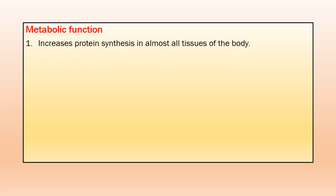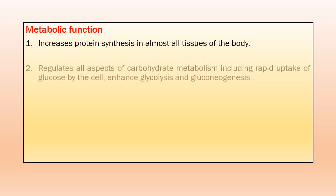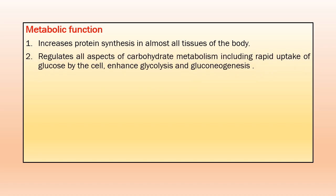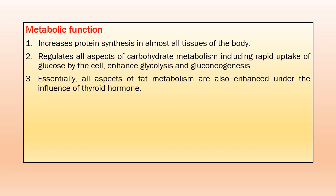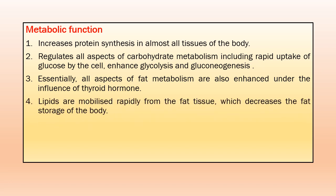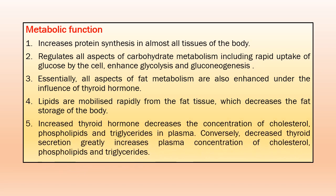What are the functions of thyroid hormone in body metabolism? Thyroid hormone increases protein synthesis in almost all tissues of the body. Thyroid hormone regulates all aspects of carbohydrate metabolism, including rapid uptake of glucose by the cell, and enhances glycolysis and gluconeogenesis. Essentially all aspects of fat metabolism are also enhanced under the influence of thyroid hormone. Lipids are mobilized rapidly from fat tissue, which decreases fat storage of the body. Increased thyroid hormone decreases the concentration of cholesterol, phospholipid, and triglycerides in plasma. Conversely, decreased thyroid secretion greatly increases plasma concentration of cholesterol, phospholipid, and triglycerides.